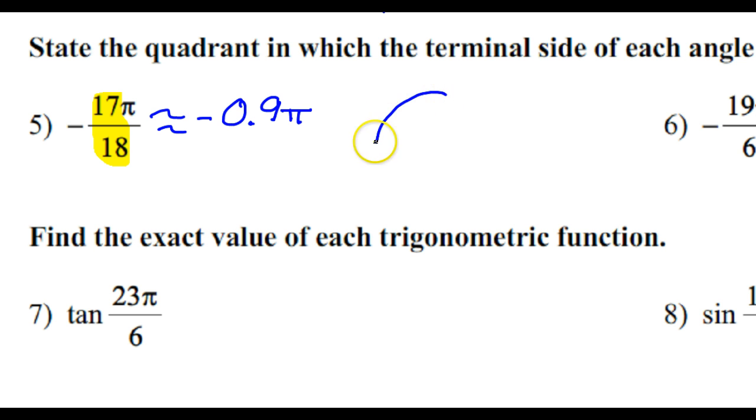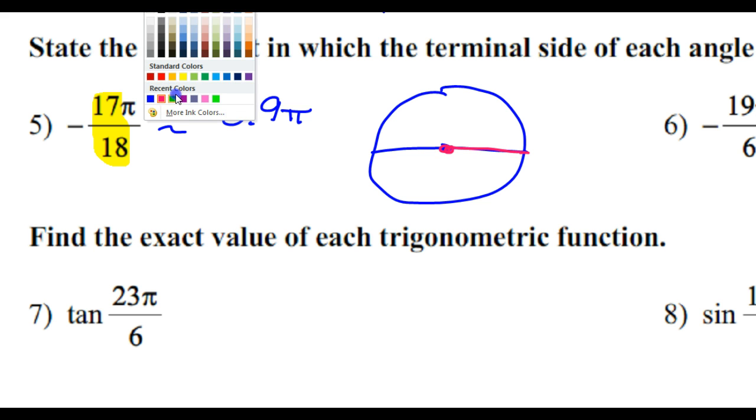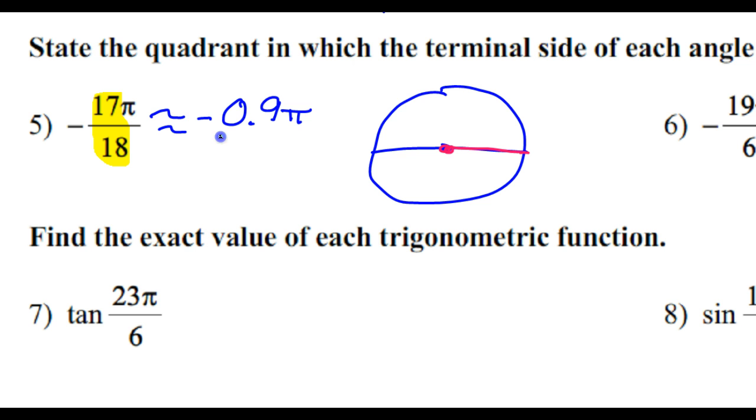So let's just draw a picture of what we're talking about. Remember that pi is a semicircle. Standard position always begins positive x-axis. Because we're talking about a negative angle, we are traveling clockwise. Now if I went from here all the way to here, that would be negative 1 pi, or negative pi.